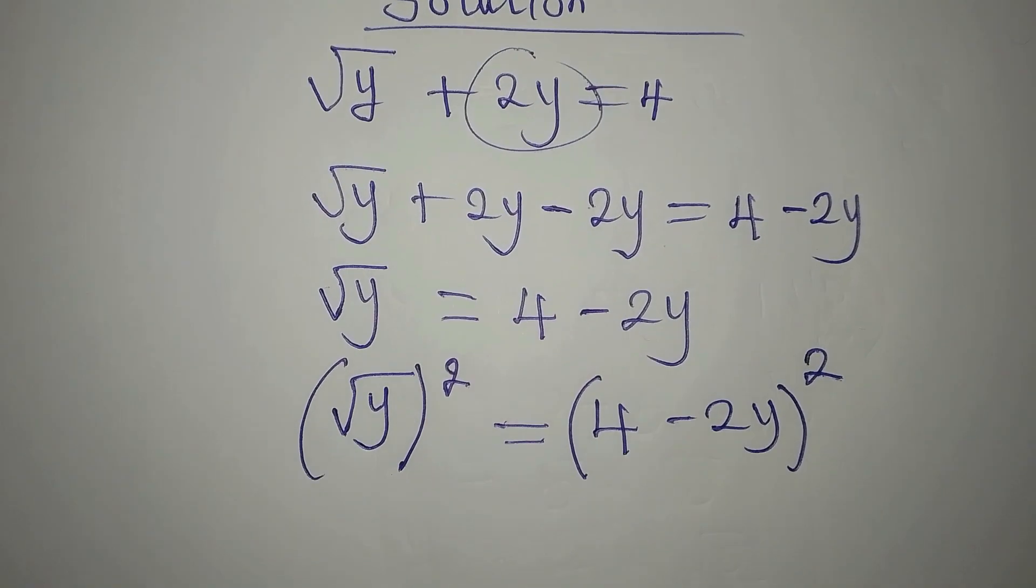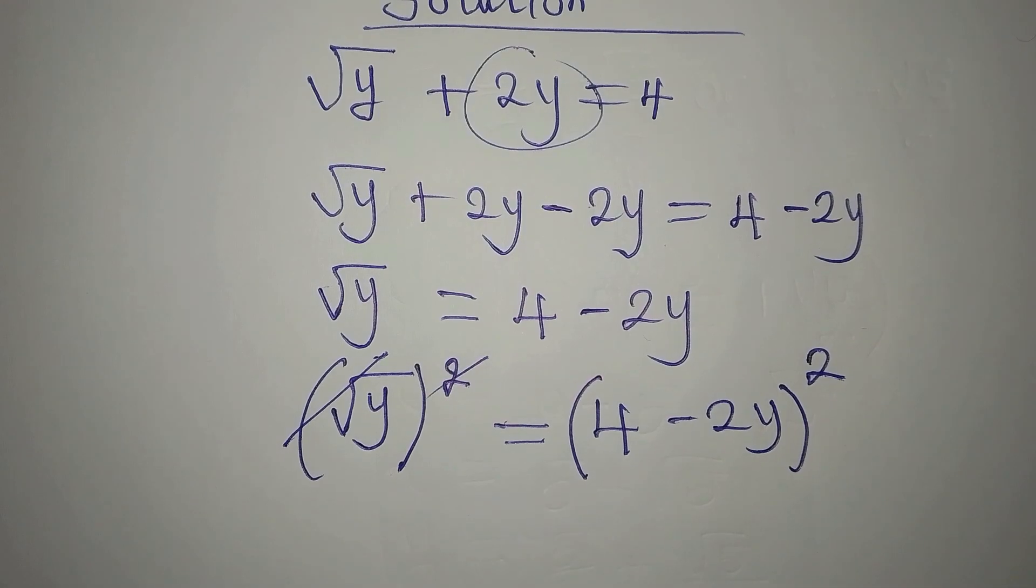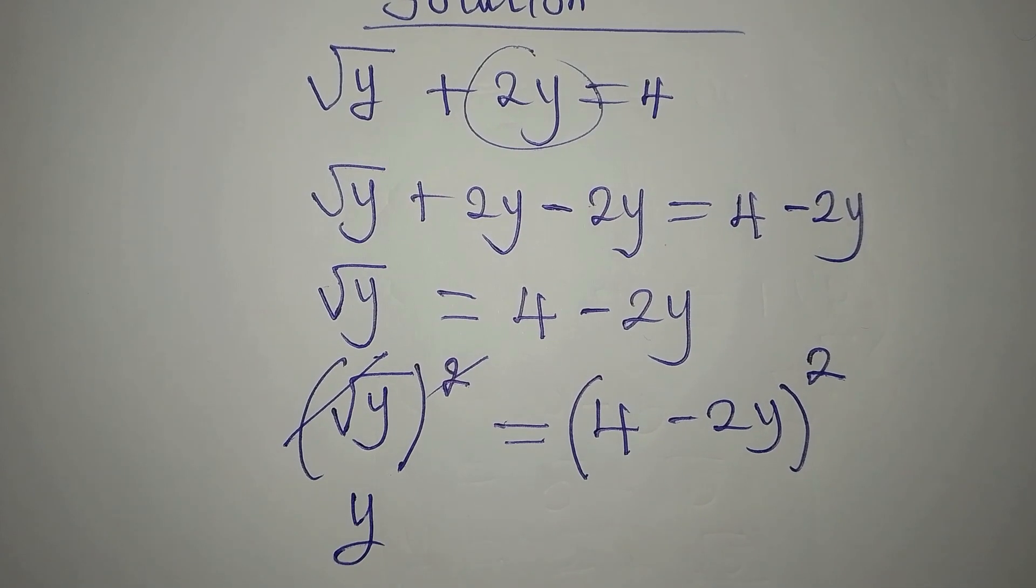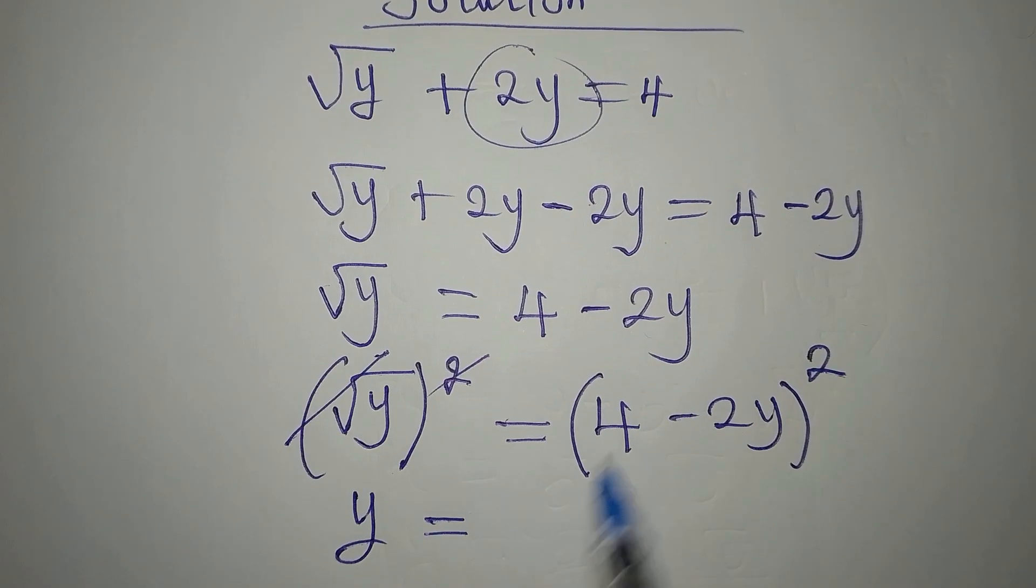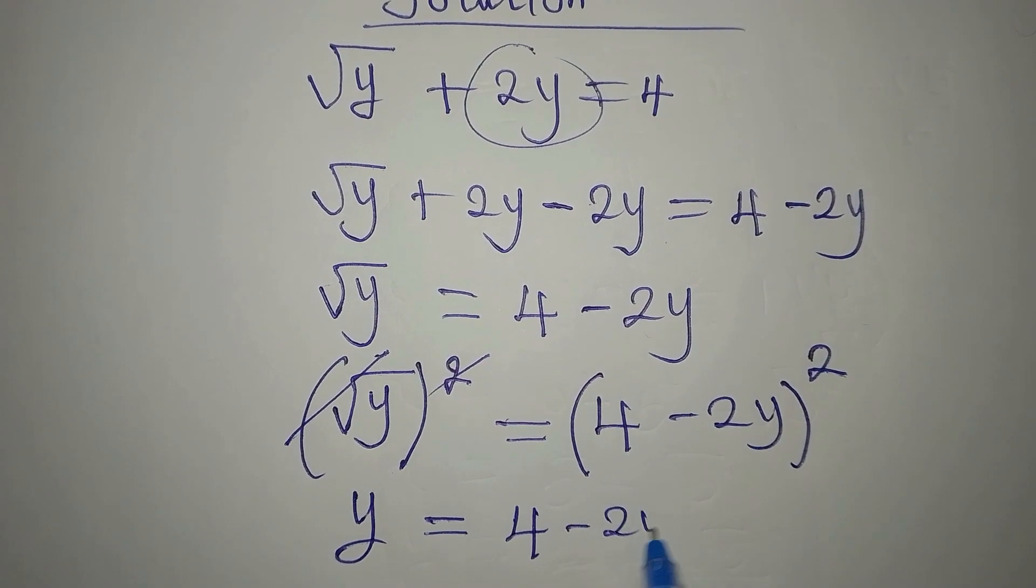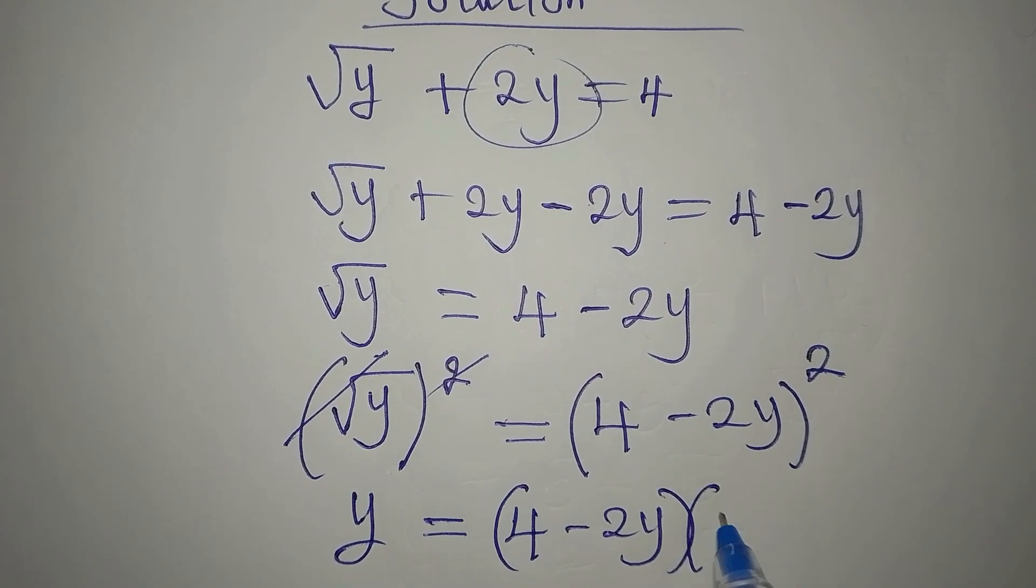This takes this away, so y comes down and it's equal to 4 minus 2y into 4 minus 2y.